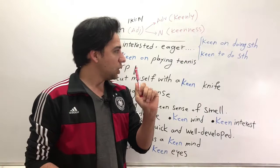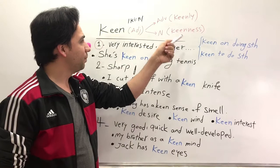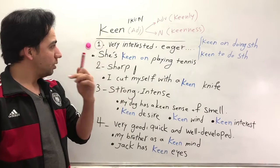So let's start with the meaning. Keen is an adjective, and the adverb is keenly, and the noun is keenness. The pronunciation is easy—it's not 'ken', it's long: it's 'keen'.